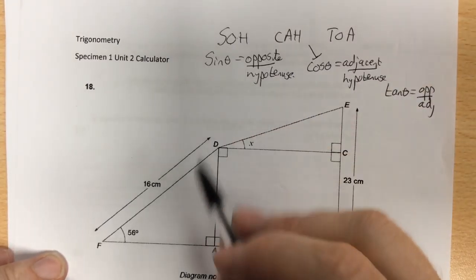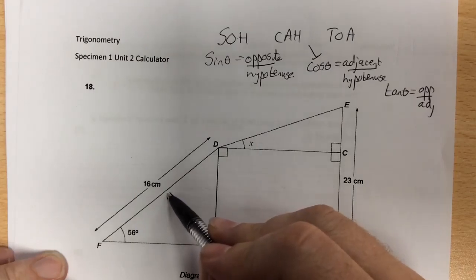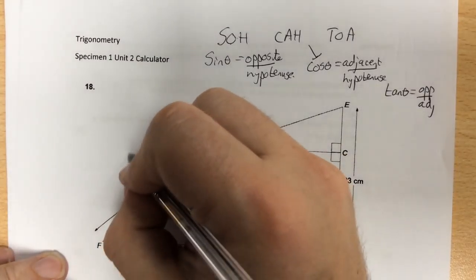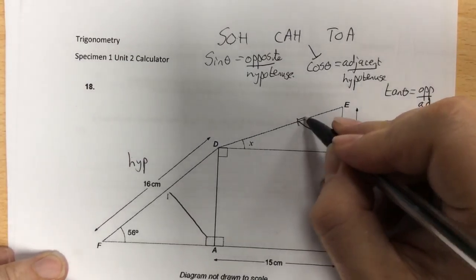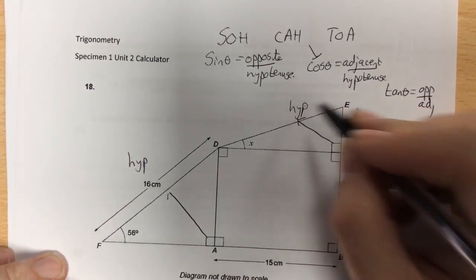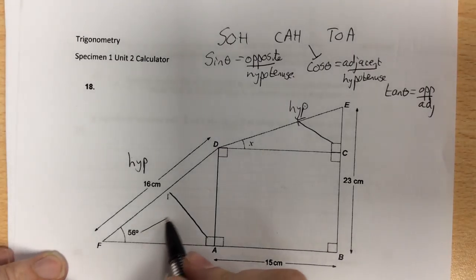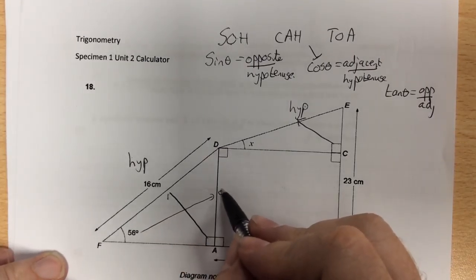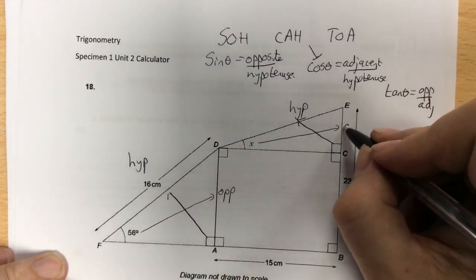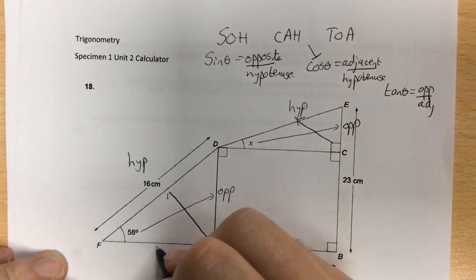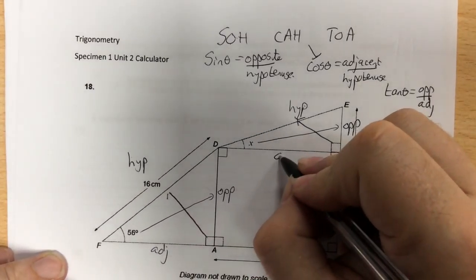The hypotenuse is the longer side, and that's always opposite the right angle. Opposite the angle you know or require is called the opposite, and the third side is always called the adjacent.